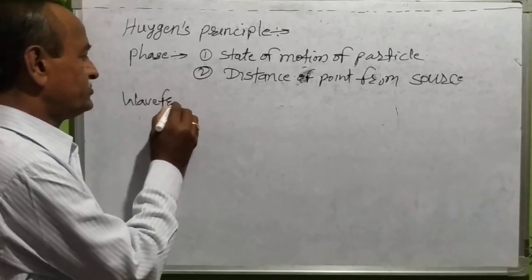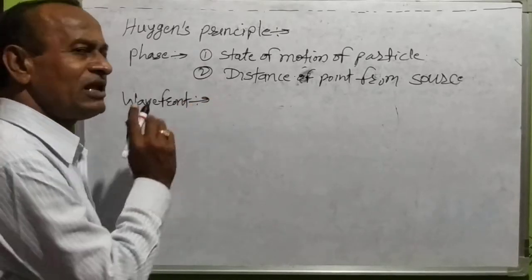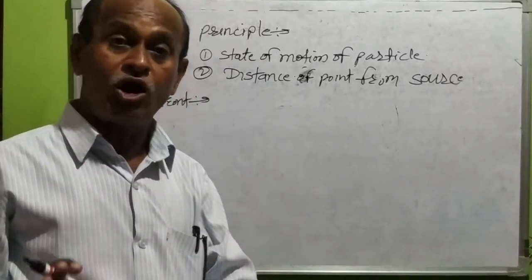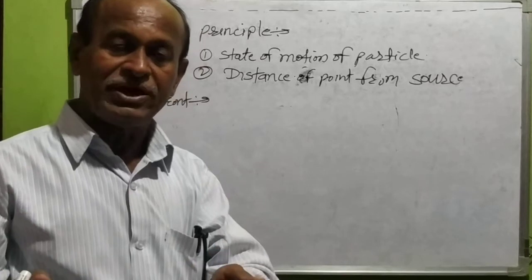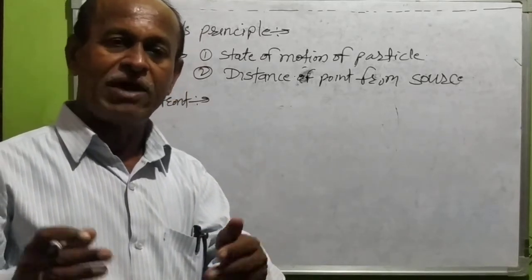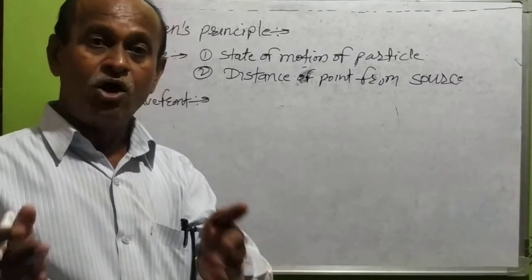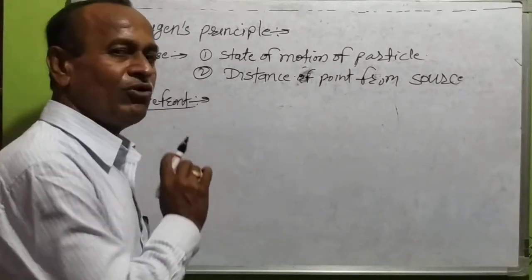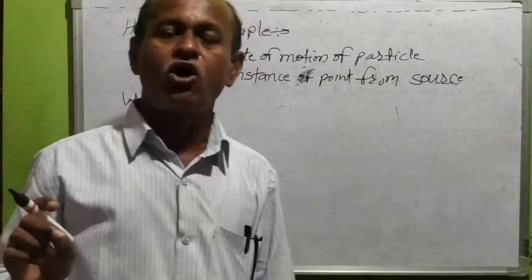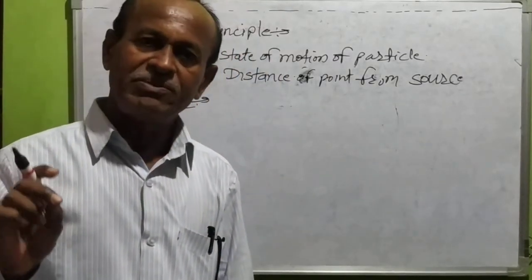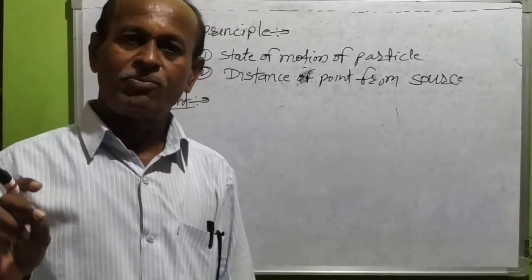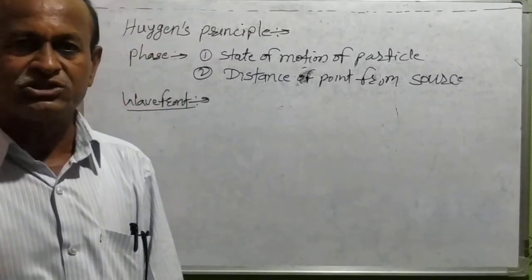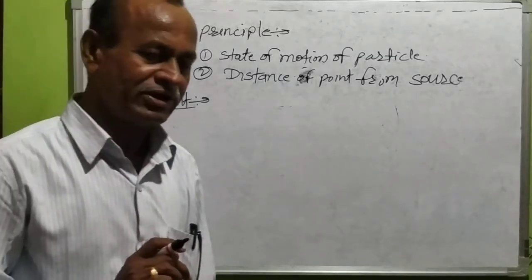Wave front. The locus of all points having the same phase on a wave surface at a given instant of time is called wave front.